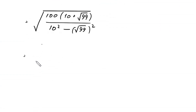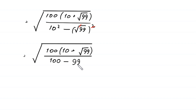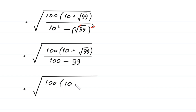Next, square root of 100 times (10 plus square root of 99) divided by 10 squared minus square root of 99 squared. Here, 10 squared equals 100, and the square cancels with the square root leaving 99, so 100 minus 99 equals 1. The denominator becomes 1.